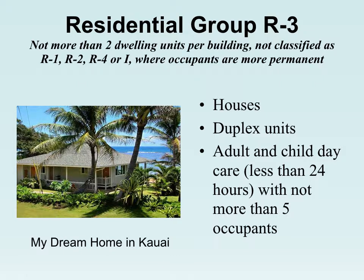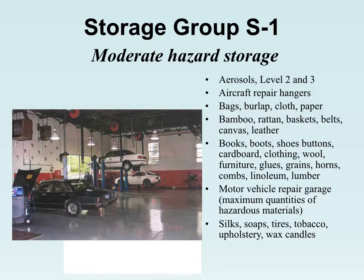R-3 includes buildings with not more than two dwelling units not classified as R-1, R-2, or R-4 — essentially single-family homes, which we inspect only when they're being built. R-4 covers adult and child daycare in residential settings with not more than five occupants, though daycare up to about 14 in a home can still be R-4.